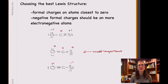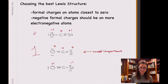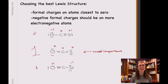Between the other two structures, the lower structure that has oxygen bearing a positive formal charge is going to be less important, because oxygen is more electronegative than sulfur, so it's going to want to bear the negative formal charge. In terms of rank order of greatest importance, we have a clear winner with the middle structure, but between the other two, the top structure is a better choice than the bottom structure because it puts the more negative formal charge on the more electronegative atom.